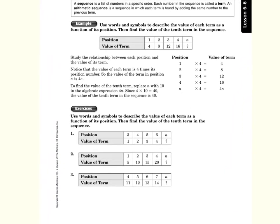A sequence is a list of numbers in a specific order. The order, that's a pattern. It goes in a special order. Each number in the sequence is called a term.